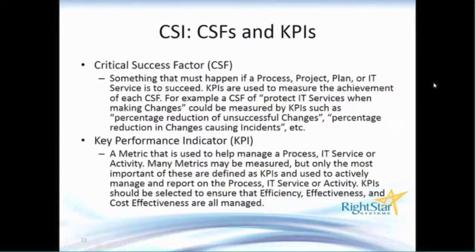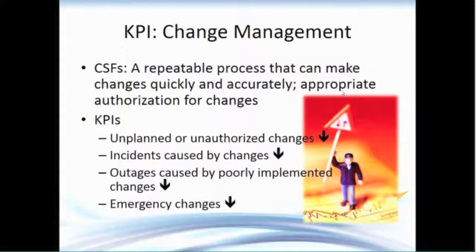As part of continual service improvement, we develop key performance indicators — the most critical metrics we gather, which should be based on our critical success factors. For change management KPIs, if it's important that we make changes quickly and accurately, we want to track and reduce incidents caused by changes, reduce the number of outages caused by poorly implemented changes, and certainly see a reduction in emergency changes. A high number of emergency changes indicates large risk and a poorly managed change process.